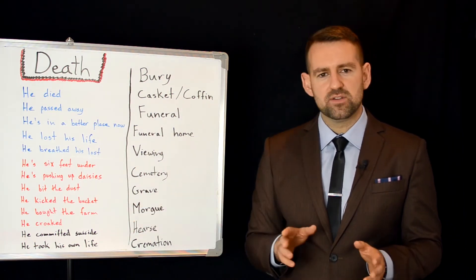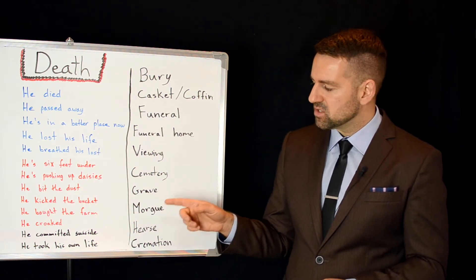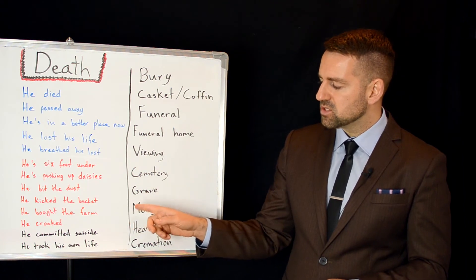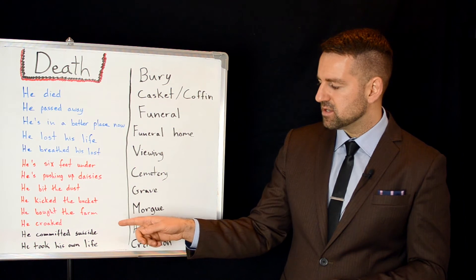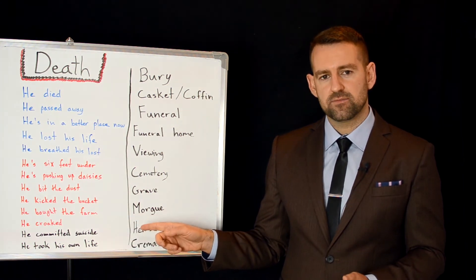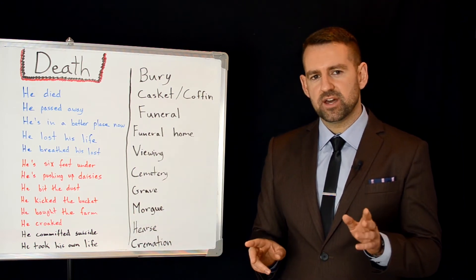If a person kills himself, then it's called committing suicide. So he committed suicide. Another way to say that is, he took his own life. Okay, so those are some ways we can talk about death.